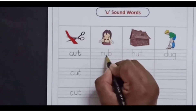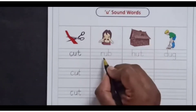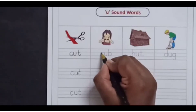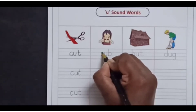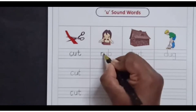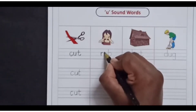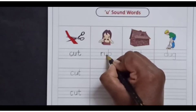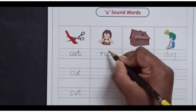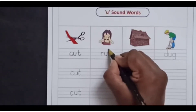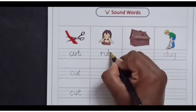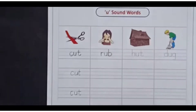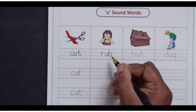This is R-U-B, rub. First trace it. Between the two blue lines, we will make a standing line, go up, touch the first blue line, make a little bit curve. For U, standing line, make a small curve, go up, come down — U. For B, from the first red line till the second blue line, make a standing line, go up, make a reversing curve, come down — B. R-U-B, rub.